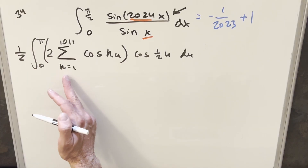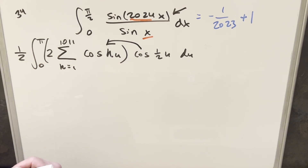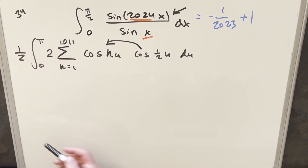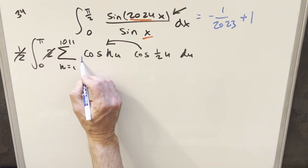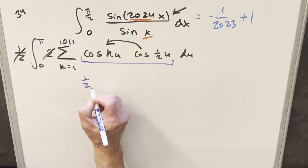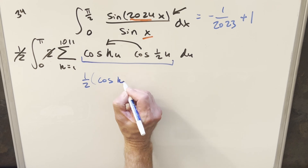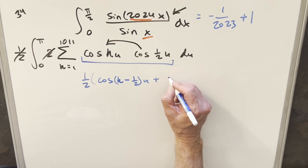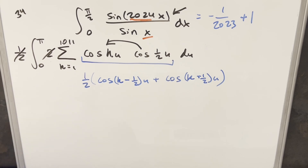Now we have the sum in parentheses, but since we're just distributing cos(u/2) into every term, we can remove the parentheses. The 1/2 and the 2 cancel off. Now I can use the product-to-sum formula for cosine on cosine(ku)·cos(u/2), giving 1/2 times [cos(k − 1/2)u + cos(k + 1/2)u]. Let's expand this out and see what's happening.